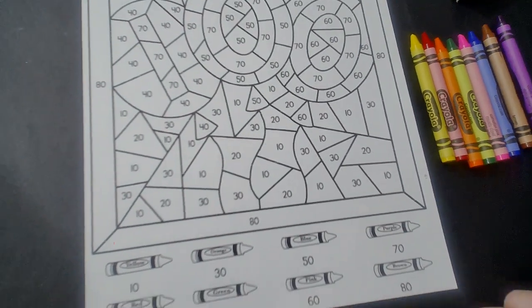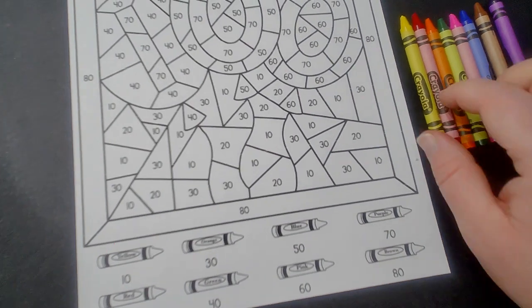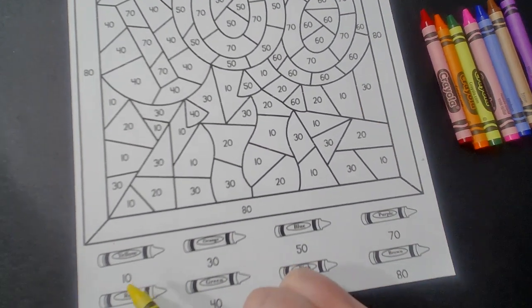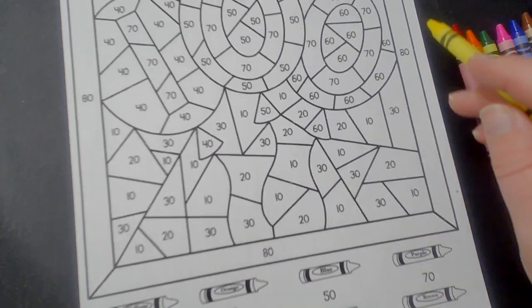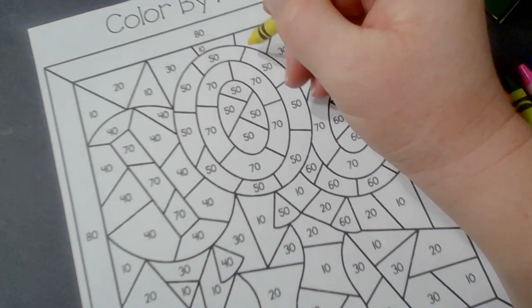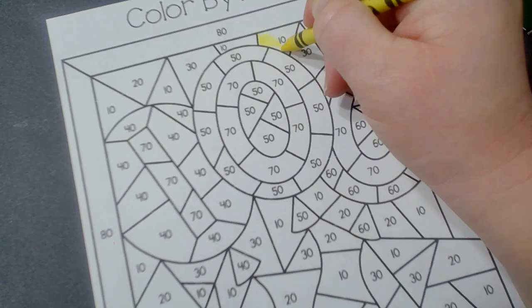We are going to decode the colors. Yellow is for tens. So anywhere you see a 10, you're going to color that whole box yellow.